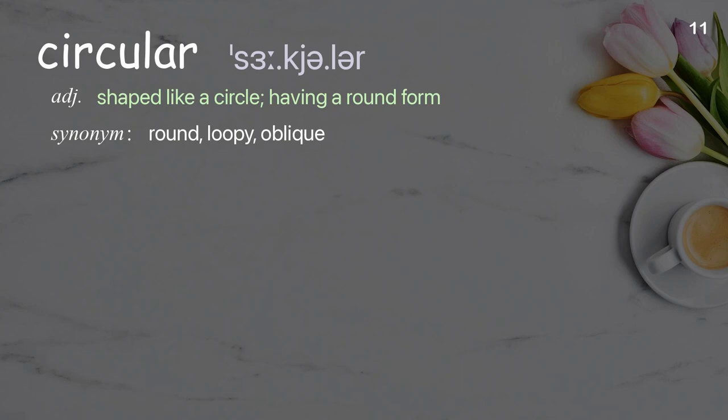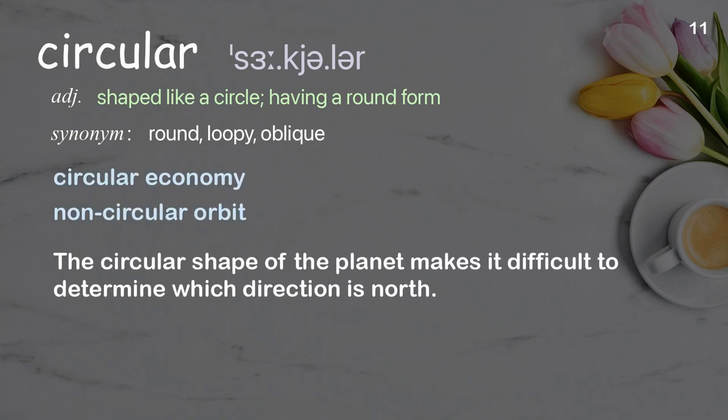Circular: shaped like a circle; having a round form. Examples: circular economy, non-circular orbit. The circular shape of the planet makes it difficult to determine which direction is north.